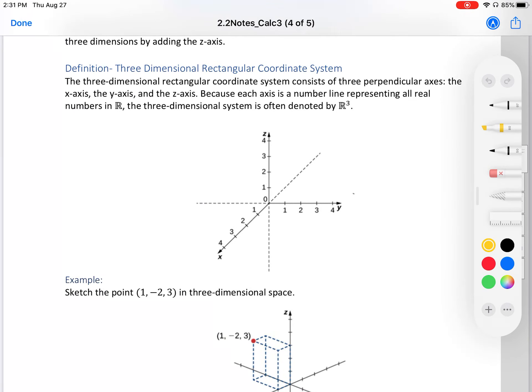Definition: Three Dimensional Rectangular Coordinate System. The three-dimensional rectangular coordinate system consists of three perpendicular axes: the x-axis, the y-axis, and the z-axis. Because each axis is a number line representing all real numbers in R, the three-dimensional system is often denoted as R³. Our next line we're adding is z and that one goes up and down.